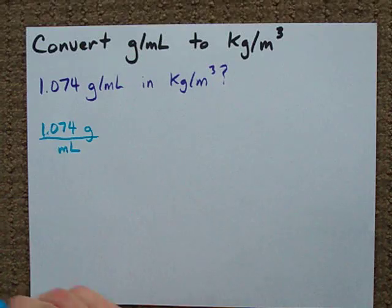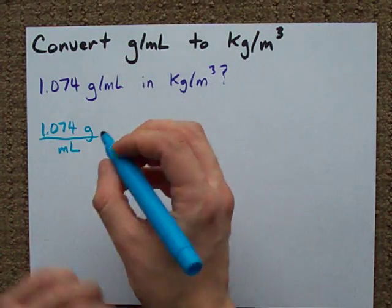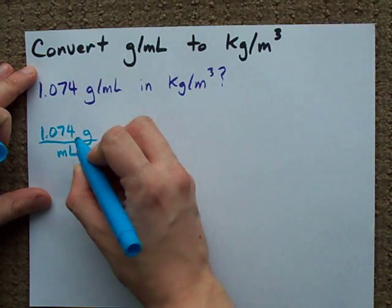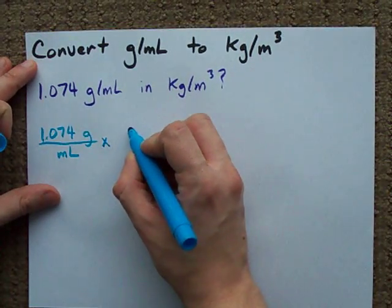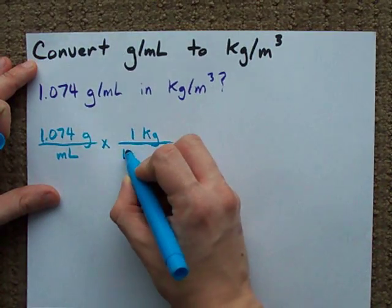We want to convert from grams to kilograms. There are a thousand grams in one kilogram. We multiply this number we were given by one kilogram over a thousand grams.